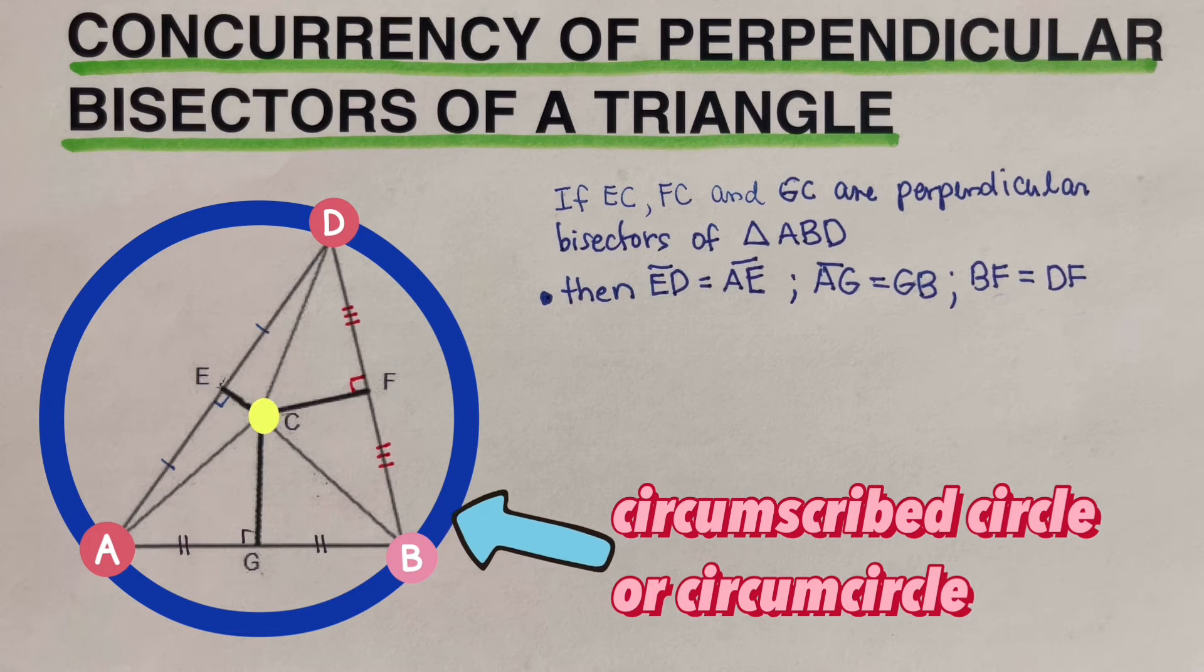This segment AC, DC, segment DC, and segment BC are radii of the circle. This means that AC, DC, and BC are equal to each other. So then I'm just going to go ahead and add that up here.